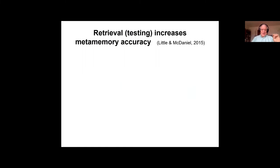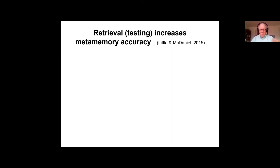I want to talk about indirect effects, which aren't generally studied in the lab but could have great consequences in the classroom. One thing that retrieval or testing does is increase metamemory accuracy — quite simply, if you take a test on something, you know pretty well what you know and what you don't know. We also know that students' metamemory — their awareness of what they've learned well and what they can remember for a later test — is poor. Retrieval increases that metamemory accuracy.